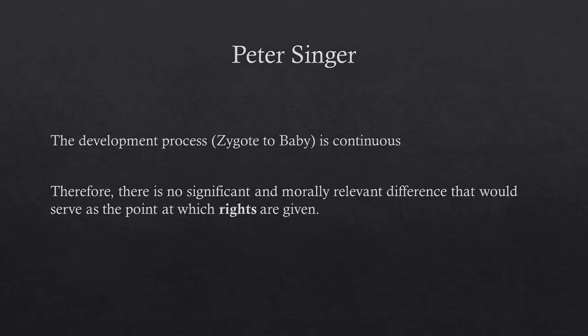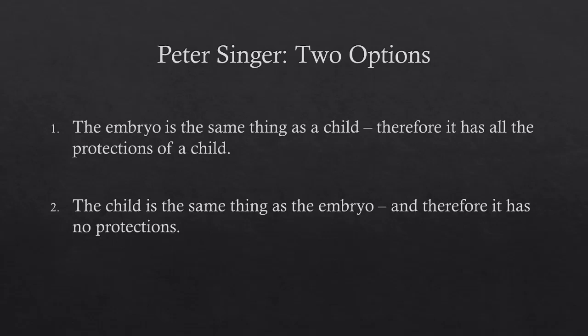Option two is to take that same 'can't find a morally significant line' position, but read it in reverse. If the zygote has no rights, then the child has no rights either. It becomes irrelevant that one is in the mother and the other one is out. Since the earlier version had no rights, the later version can't have any either, because there is no clear line of differentiating the two. So we're left with two options: one, the embryo is the same thing as a child and therefore has all the protections of a child; or two, the child is the same thing as the embryo and therefore has none of the protections.